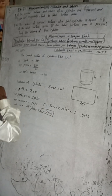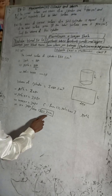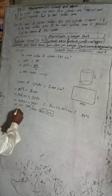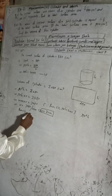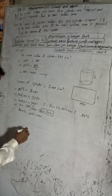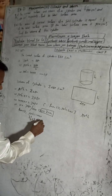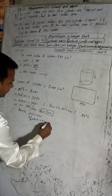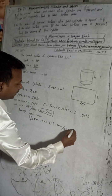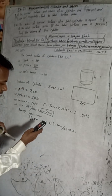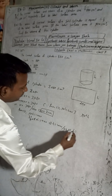Now we can find h. From equation one, πrh = 440. Substituting π = 22/7 and r = 7: (22/7) × 7 × h = 440, which simplifies to 22 × h = 440. Therefore h = 440 ÷ 22 = 20 cm.